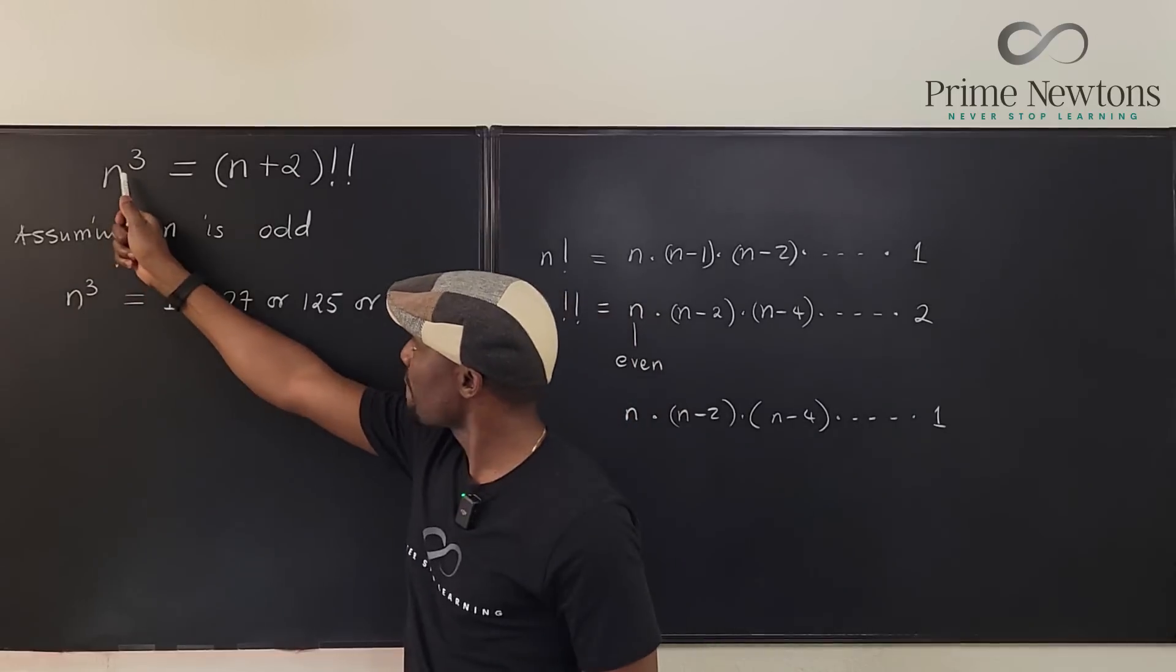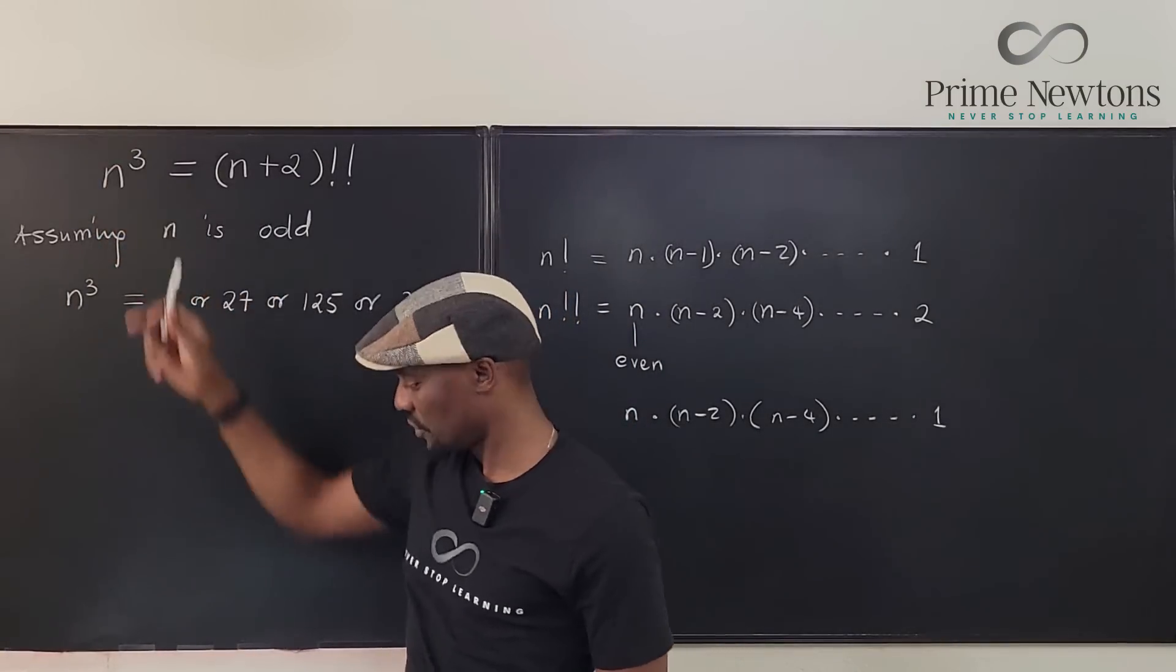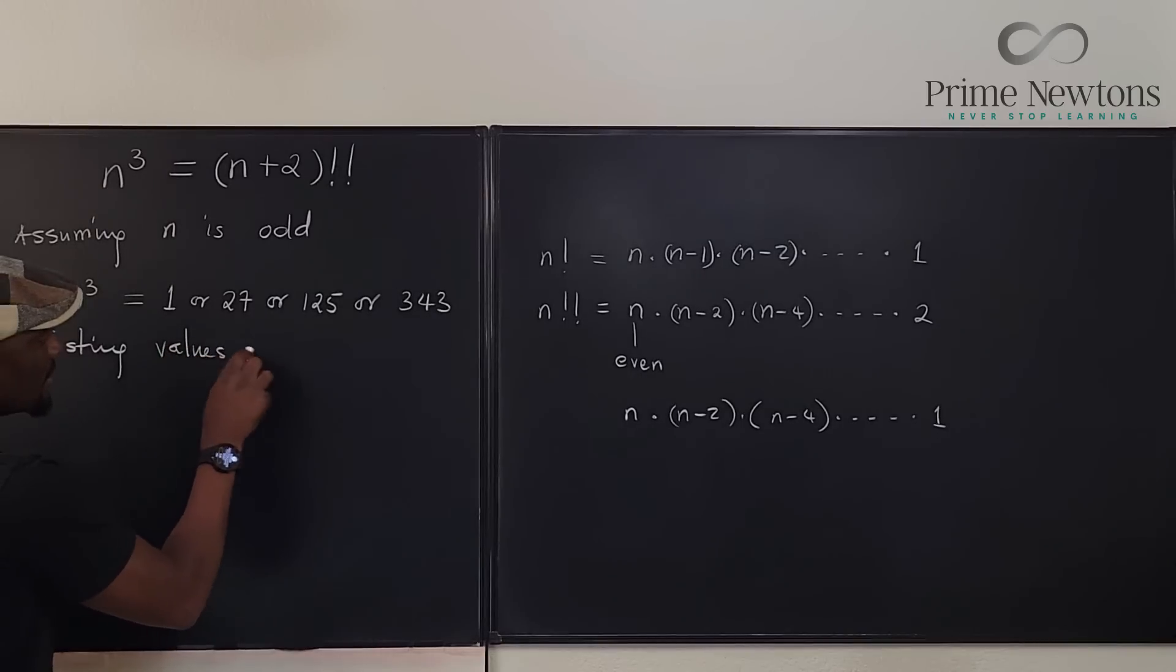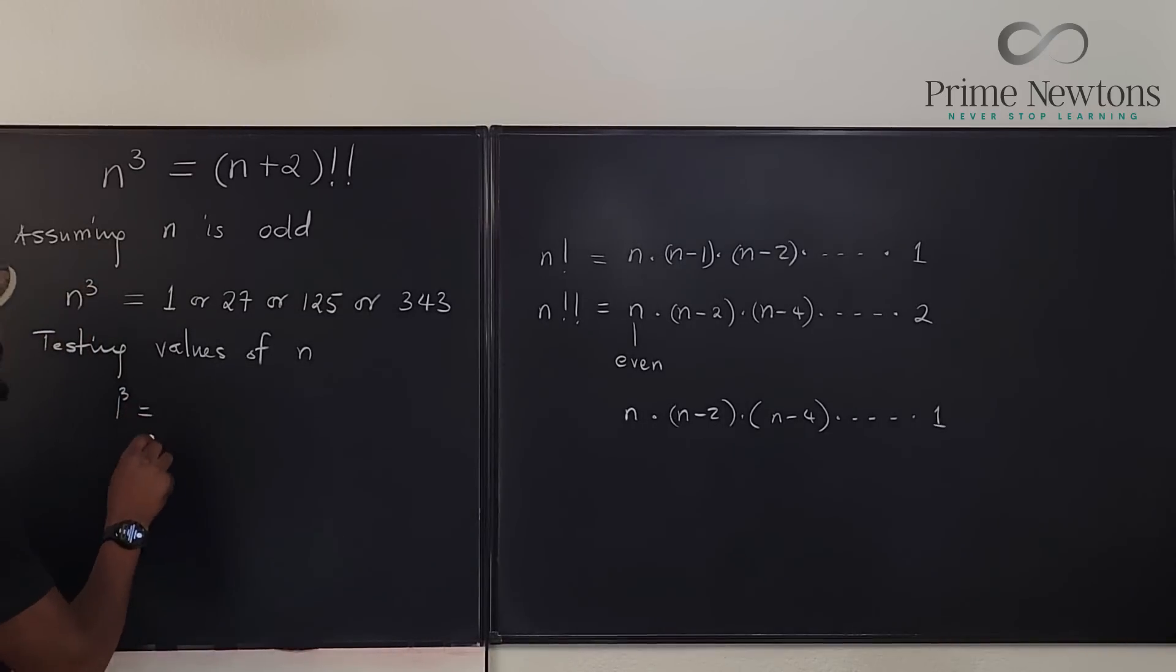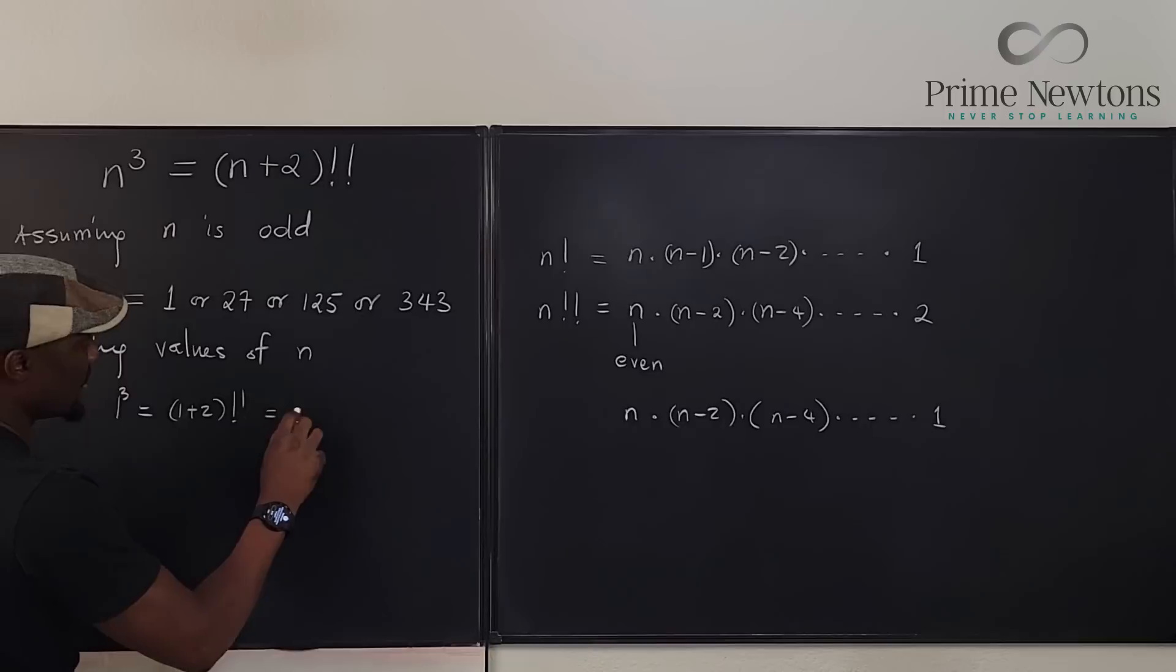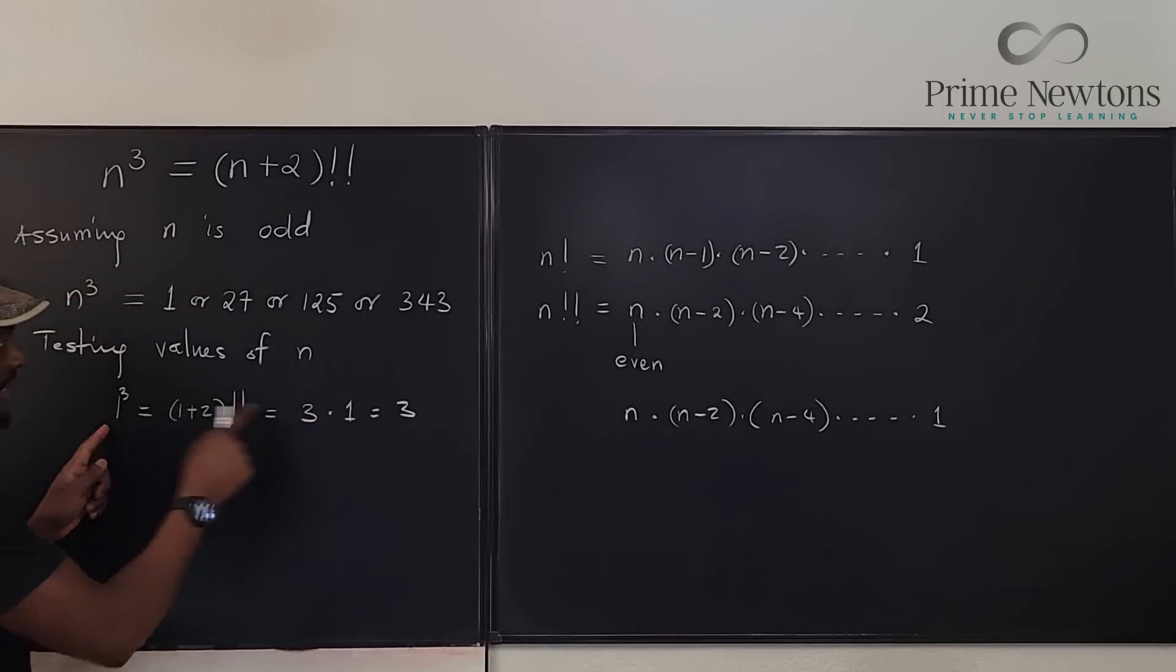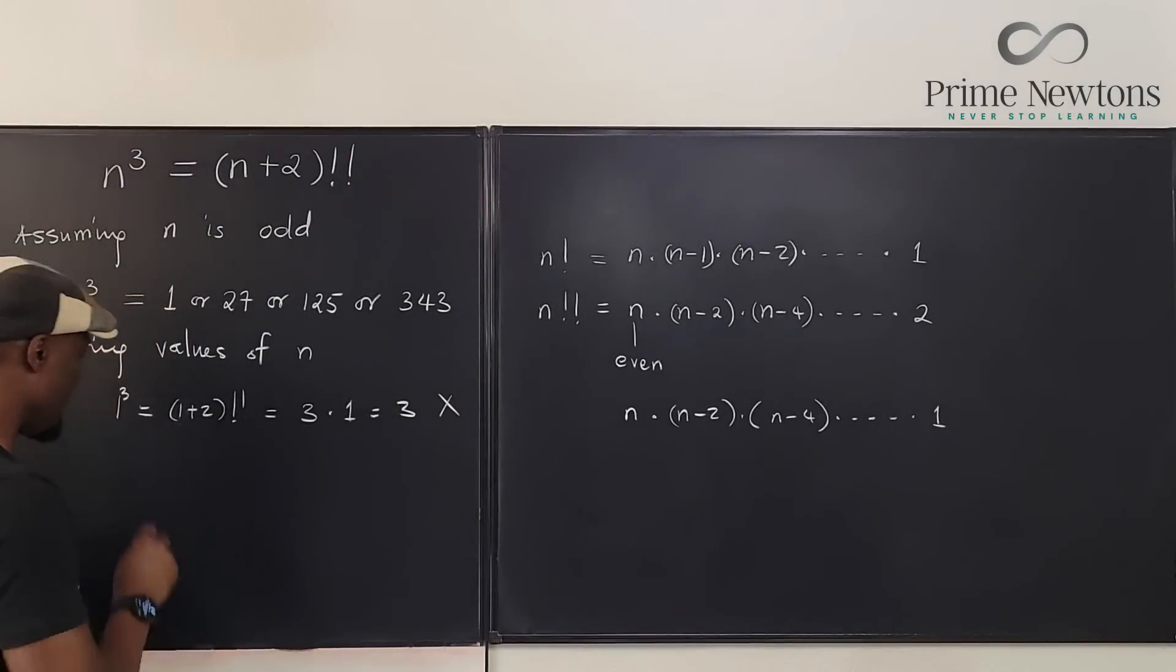So here, you're going to say that this is either 1, but it cannot. Can it be 1? Well, we can say 1 cubed. So testing values of n. We can say 1 cubed is equal to 1 plus 2 double factorial, which is equal to 3 times 1, which is 3. This is equal to 3 is not true. So let's go to the next number.